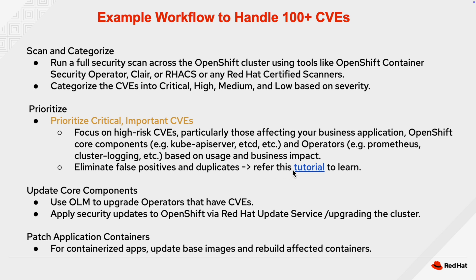Once you prioritize high-risk CVEs, you can move forward with medium or low severity. Once this prioritization is done, you can figure out what patches are available. If you have any add-on operator installed via OLM and the CVE patch is available for that operator, you could simply move ahead and upgrade it via OLM upgrade strategies. If a CVE patch is available in Red Hat CoreOS, you would need to update the OpenShift cluster release to the next minor or major release. For additional containerized apps that need patches in libraries or base images, you need to rebuild those containers so that the CVE patch is applied within your application.